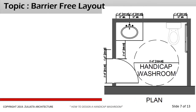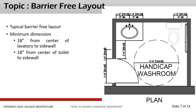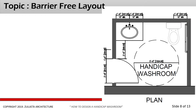A barrier-free layout — what you have here is a typical floor plan for a handicapped washroom. A barrier-free layout will have a minimum dimension of 18 inches from the center of your lavatory to your sidewall, and 18 inches from the center of the toilet to your sidewall. It should also have a turnaround of five feet in width — a circle that should be free of all impediments or obstructions.